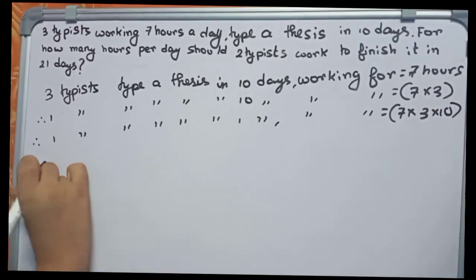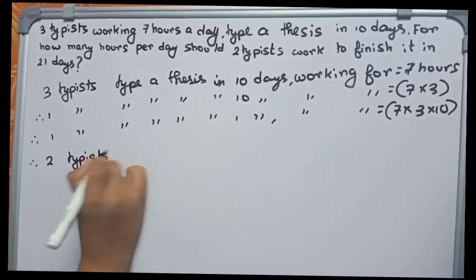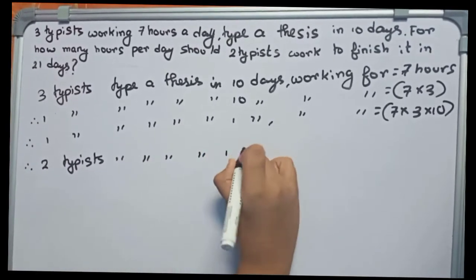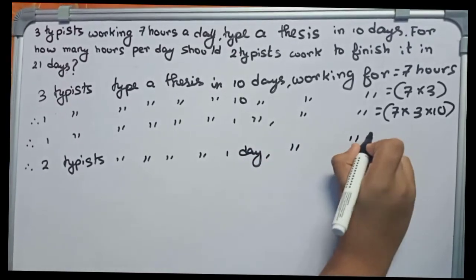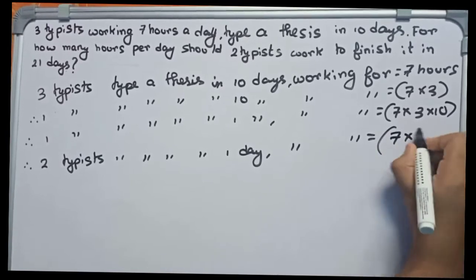We keep it like this only. Now I write that two typists type a thesis in one day working for seven into three into ten divided by two.